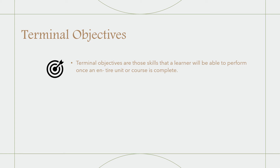Terminal objectives are another type of objective. Terminal objectives are the skills that a learner will be able to perform once an entire unit or course is complete, expressing what learners will be able to do upon finishing the lesson. Terminal objectives should be created for each of the tasks addressed in the lesson, focused on the level at which the task is supposed to be accomplished. Each written objective should include a task, a condition, and a standard.